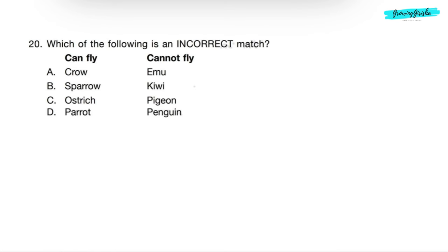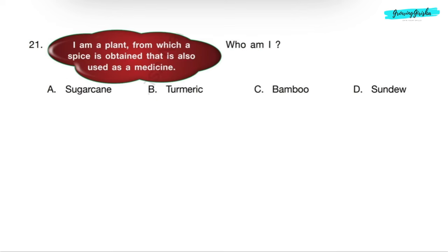Question 20: Which of the following is an incorrect match? Option A: Crow can fly, Emu cannot fly. It is a correct match. Option B: Sparrow can fly, Kiwi cannot fly. It is also a correct match. Option C: Ostrich can fly - No, it cannot fly. Pigeon can fly. So option C is incorrect match. Option D: Parrot can fly, Penguin cannot fly. This is also correct match. Question is asking incorrect match, so correct answer will be option C.